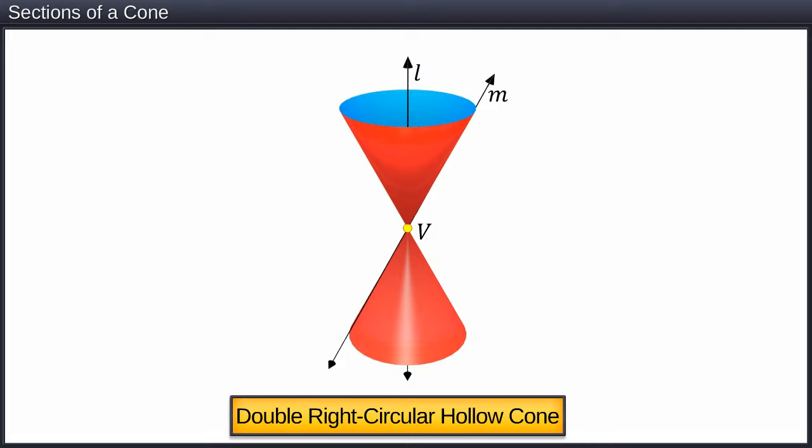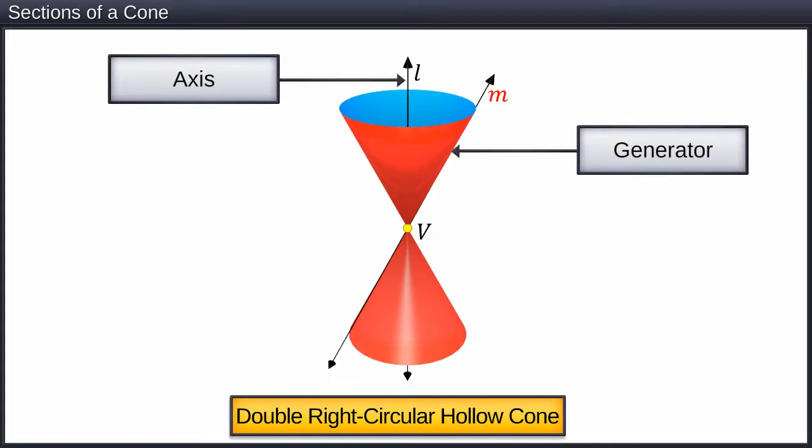Let us identify the different parts of a cone. The fixed vertical line passing through the center of the cone is called its axis. The rotating line M that generates the surface of the cone is called the generator. The fixed point at which the generator cuts the axis is called the vertex of the cone.